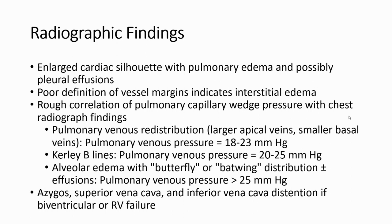In radiograph, there are many signs we have to find. In the lateral view, the layered survey shows pulmonary edema and possible pleural effusion. Correlation of pulmonary capillary wedge pressure with chest radiograph findings like pulmonary venous redistribution, Kerley lines, edema, classical superior vena cava and inferior vena cava, and effusion if in biventricular or right ventricular failure.